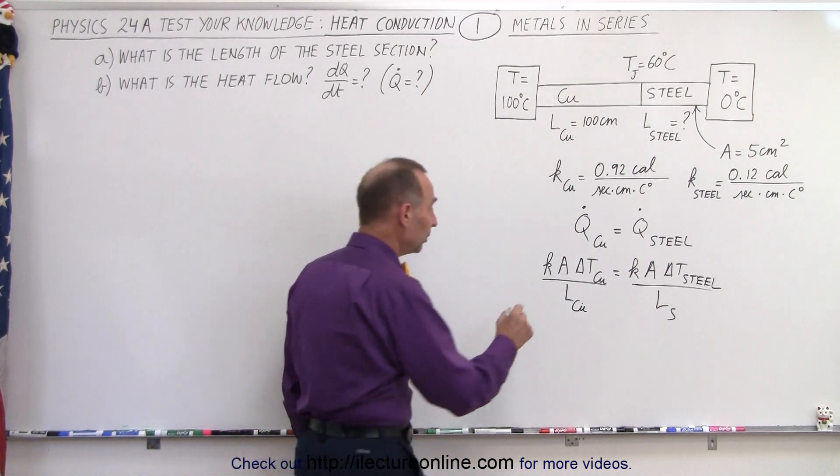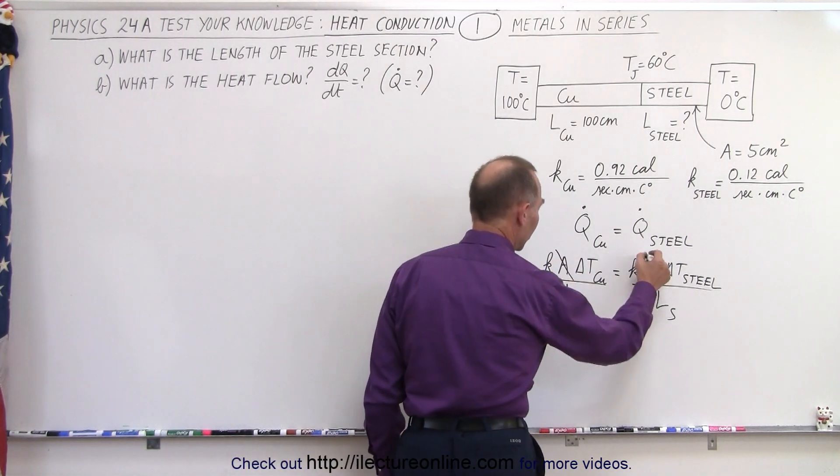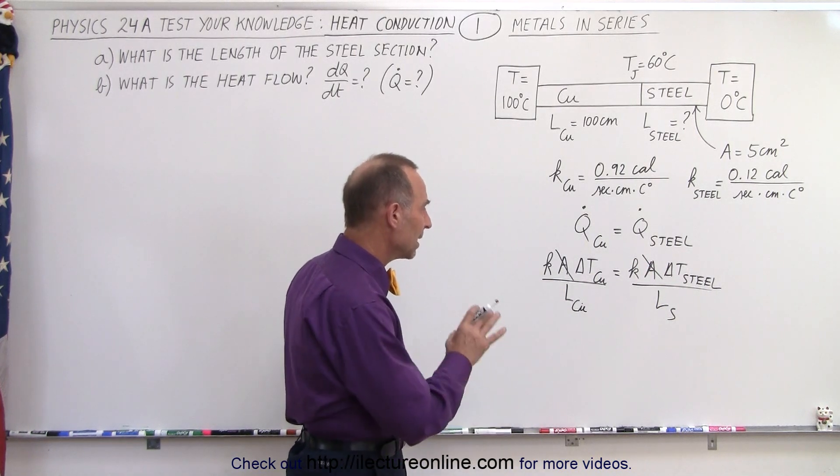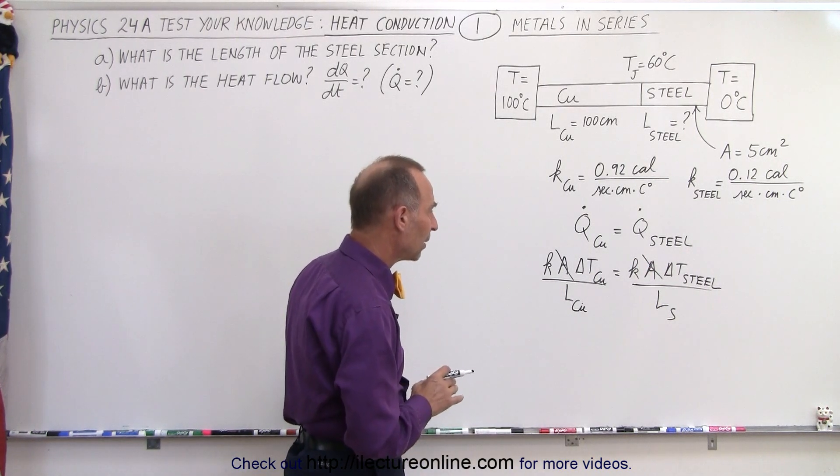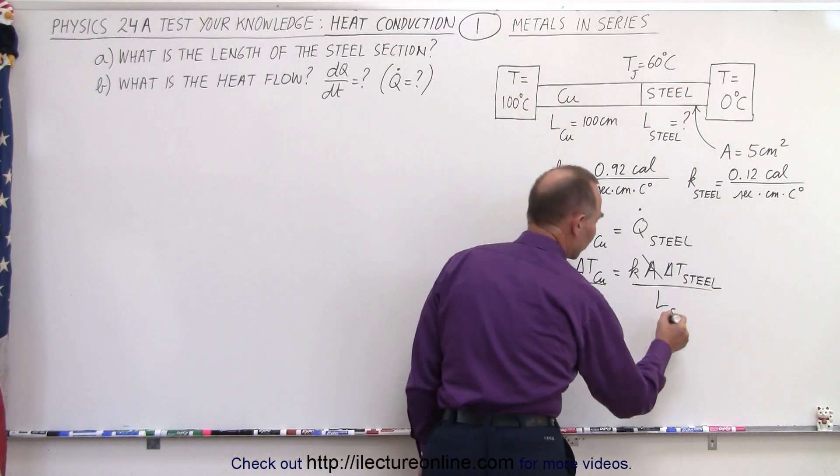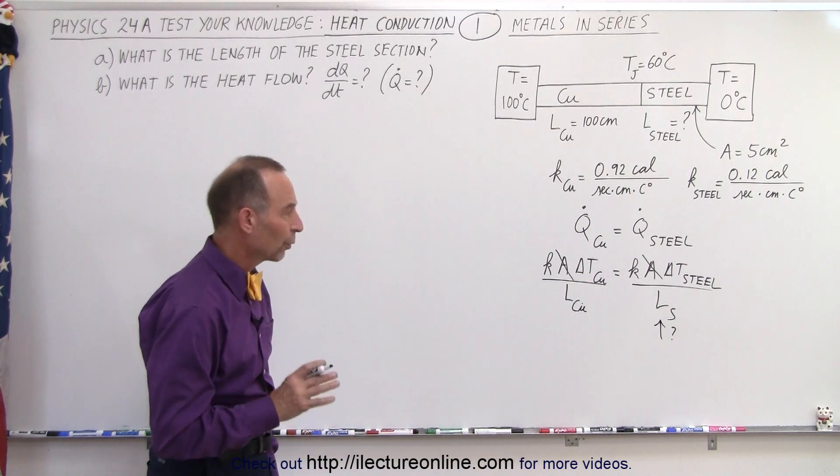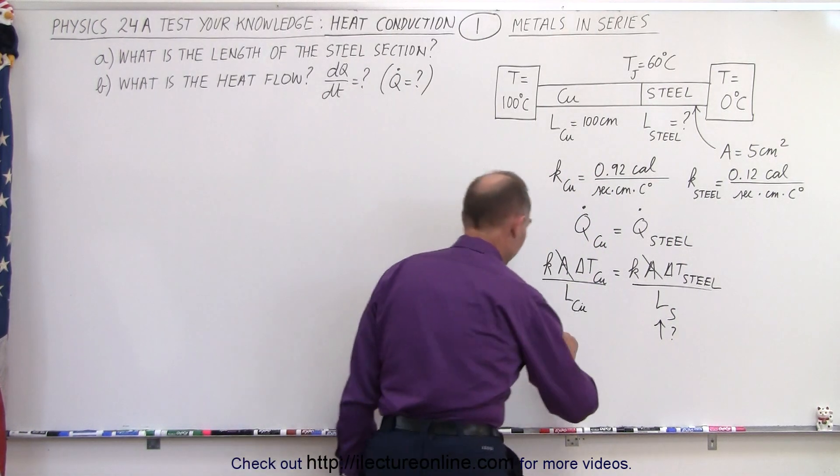Now notice that the cross-sectional area will be the same for both, so those cancel out. We can divide both sides by A. And we know what the delta temperature is for the copper. We don't know what this is, so this is the question we're looking for, so we're going to solve that for the length of the steel.